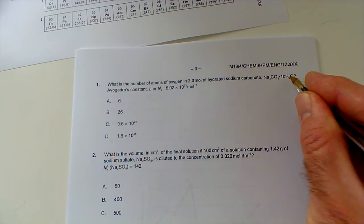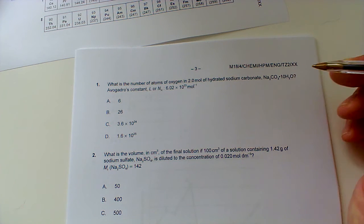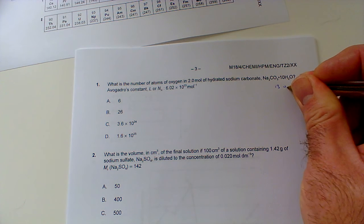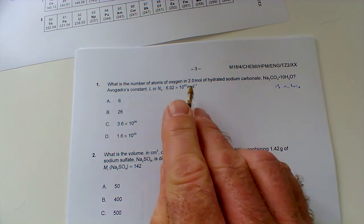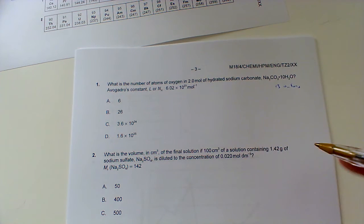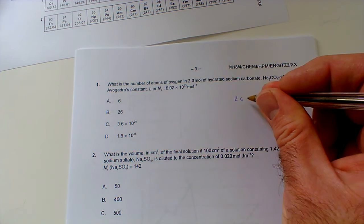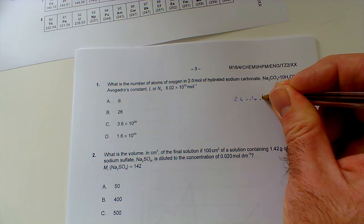What is the number of atoms of oxygen in two moles of hydrated sodium carbonate, the decahydrate with water of crystallization? And of course you've got Avogadro's constant because you need to multiply to get the number of atoms. How many oxygen atoms in the formula? Well there's 3 there plus 10 there, so that's 13 oxygen atoms in total.